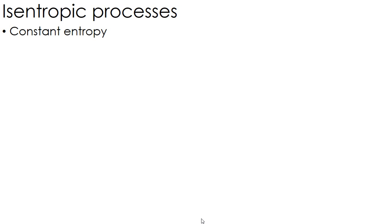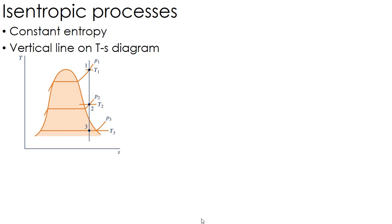Isentropic means constant entropy. On a TS diagram (temperature versus entropy), this would be a vertical line.